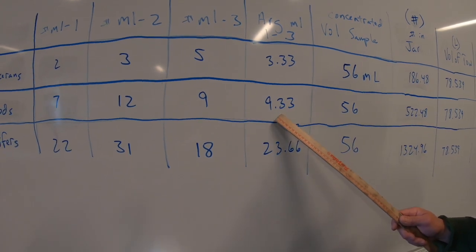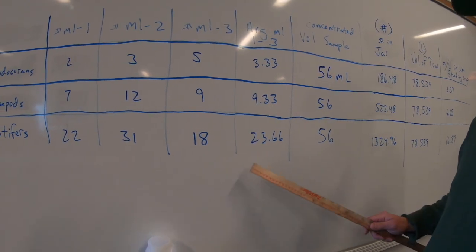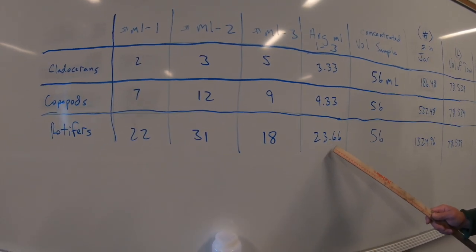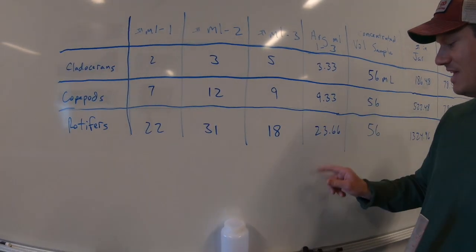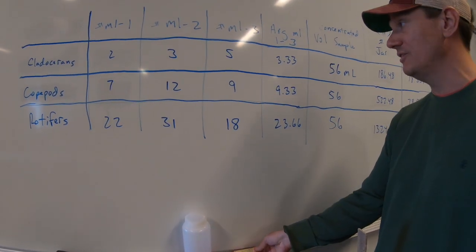Then we get into the copepods, 9.33, and rotifers were most abundant at 23.66. In other words, these are the average of three of these that you looked at.